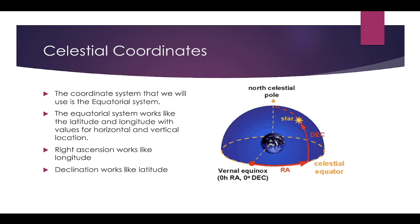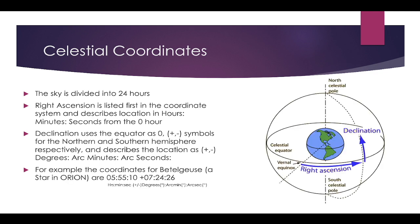The equatorial system works a lot like latitude and longitude for the Earth. There's a horizontal component and a vertical component. The horizontal component that is like longitude is called right ascension, and then the vertical component that's like latitude is called declination. The way that it works is we split the world into 24 hours longwise, or 24 sections.